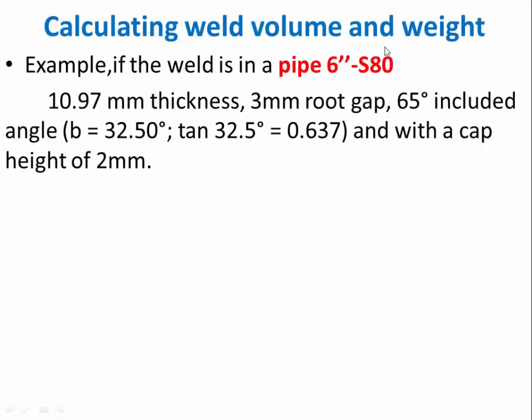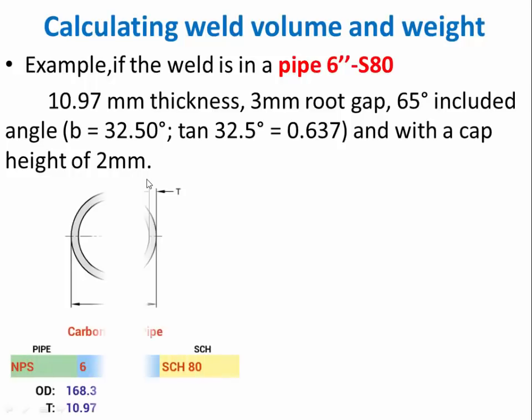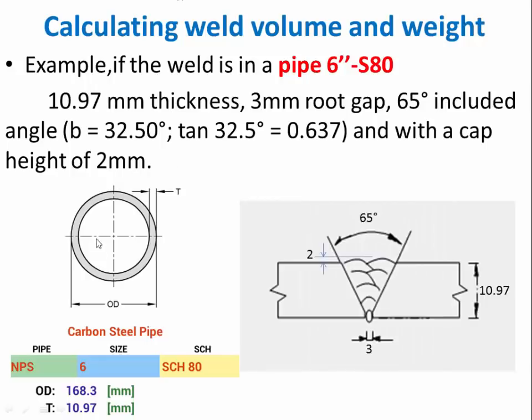For example, a 6-inch pipe Schedule 80. This is one example, carbon steel pipe 6-inch Schedule 80. OD 168.3 mm and thickness 10.97 mm. This bevel angle 68 degrees, gap 2 mm, pipe thickness 10.97 mm, root gap 3 mm.